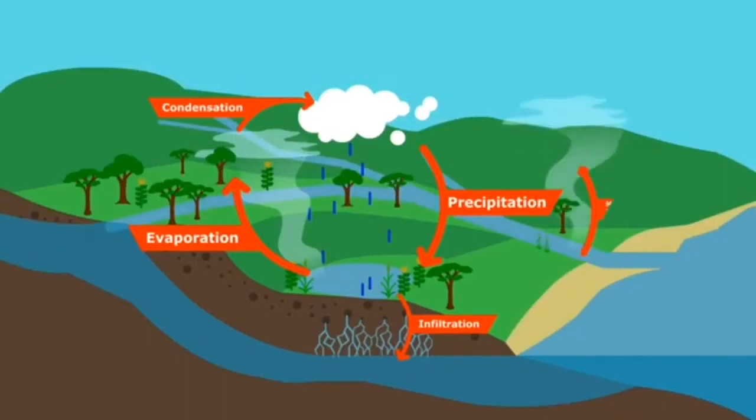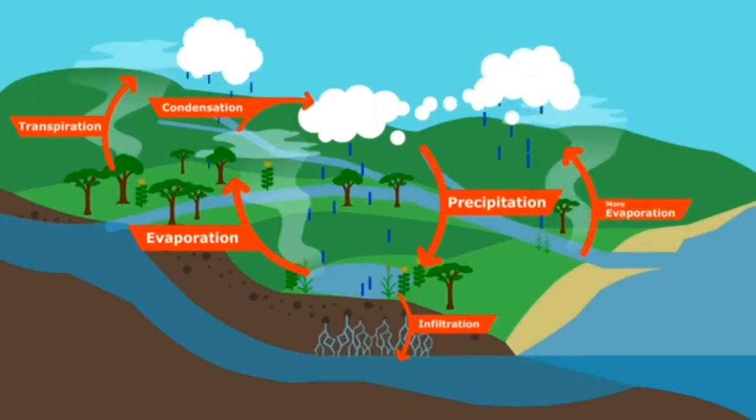There is then much more water to evaporate from the saturated ground, or to transpire through plants. This abundance of water vapor allows for more consistent rainfall.